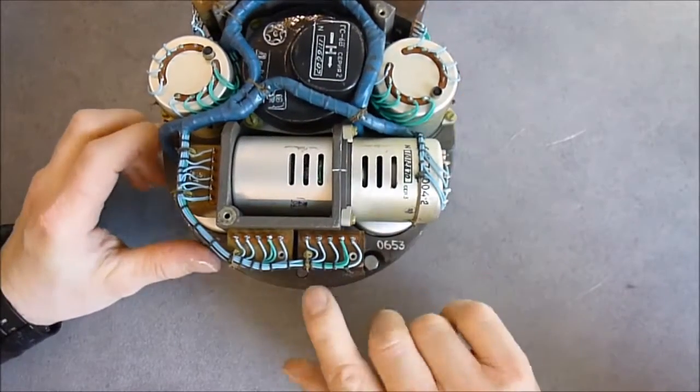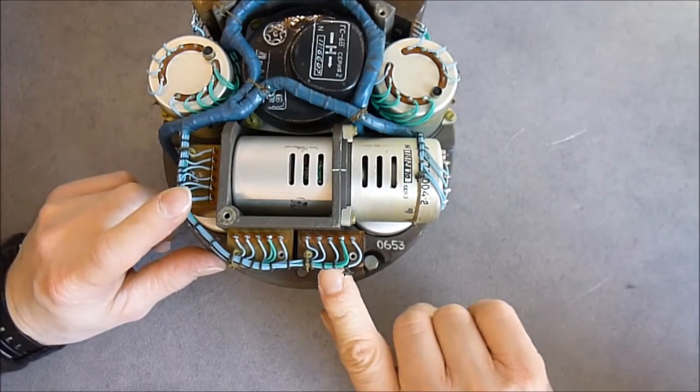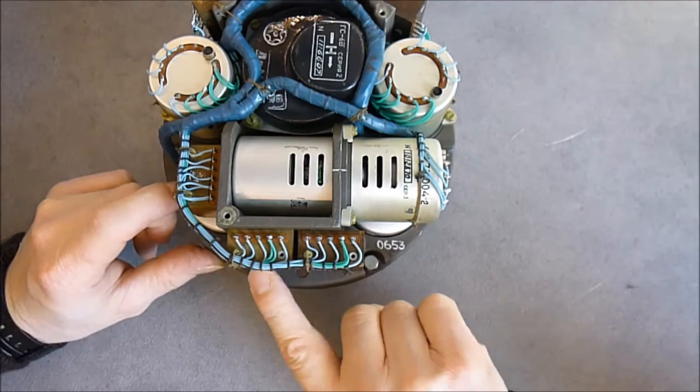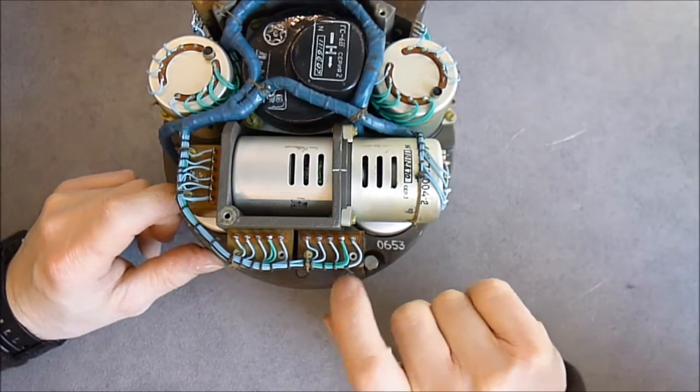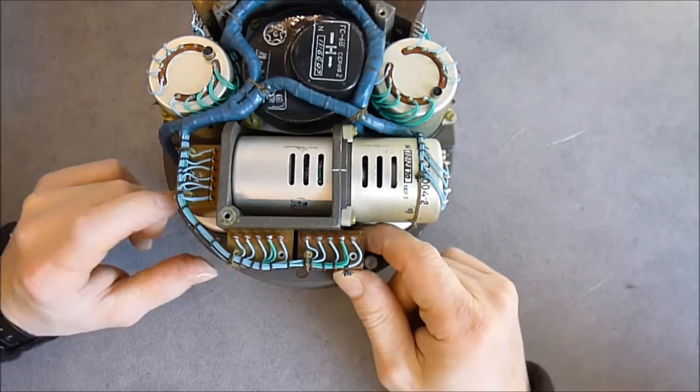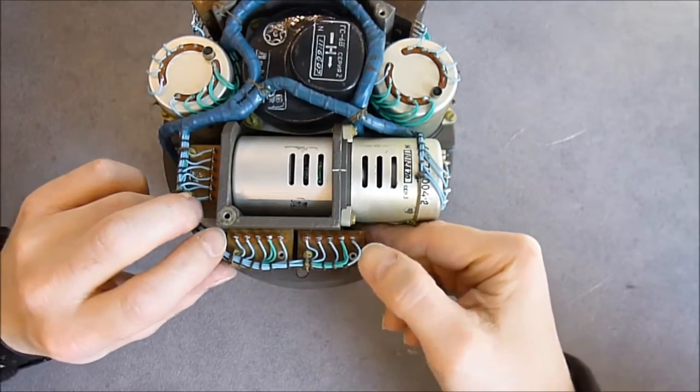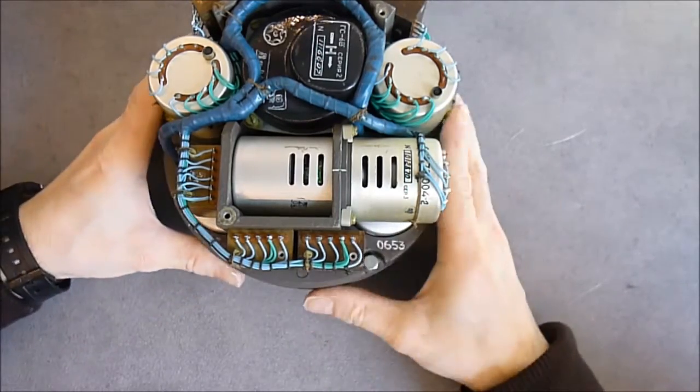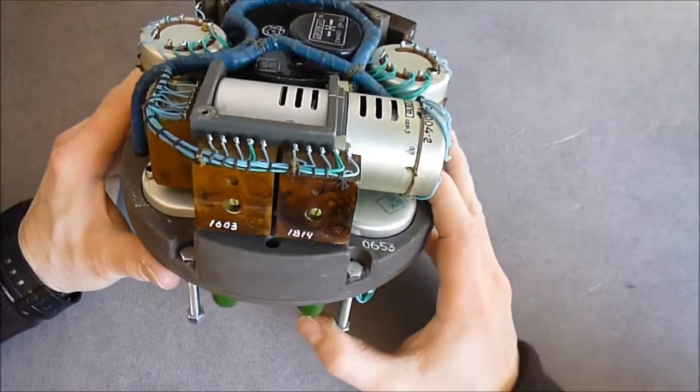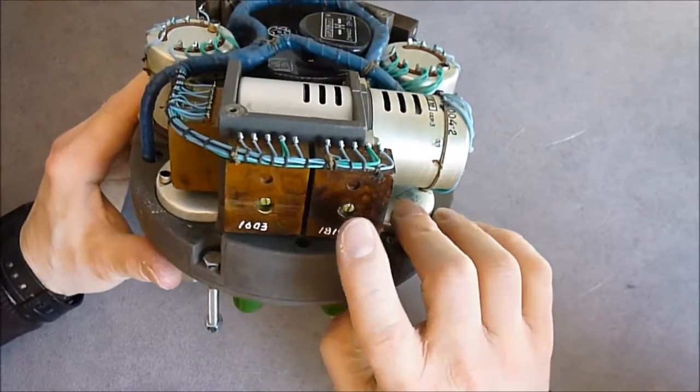So you can see all these modules have 5 or 6 contacts. They are completely potted and they have mounting screws in several directions, but only one is used each time.